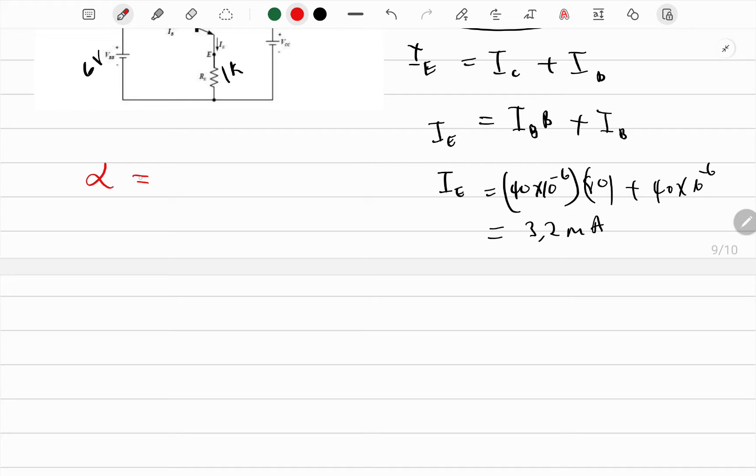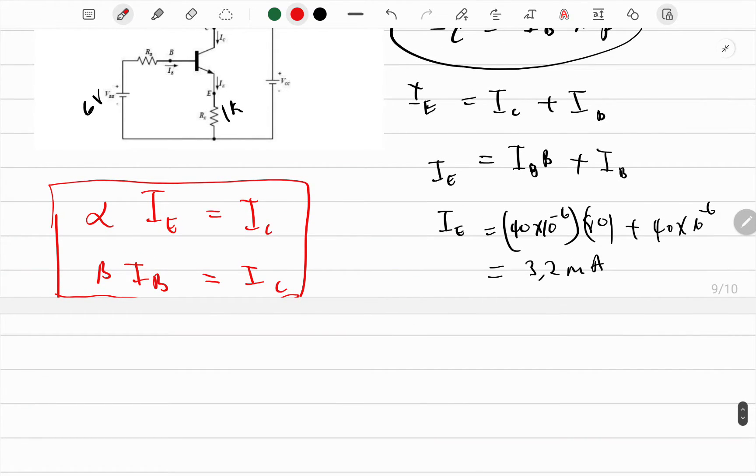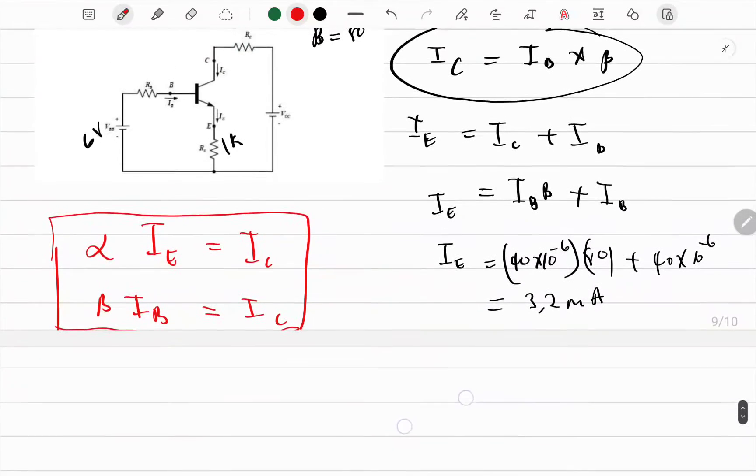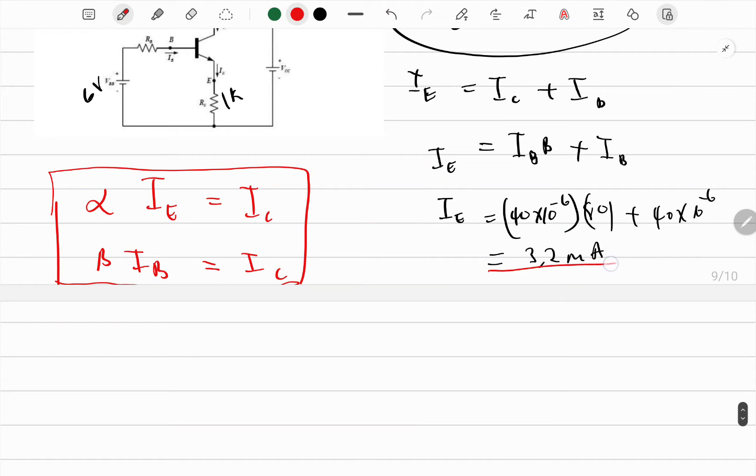Alpha relates with IE to give you IC, but beta relates with IB to give you IC. They both give you IC, not IE. I think that's the mistake I made in the past video, but all in all, the calculations I did in advance are fine. It's a matter of formulation. Let's continue with this in mind.